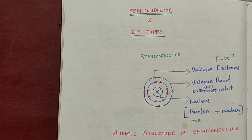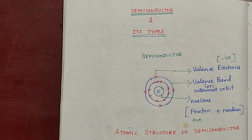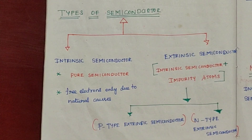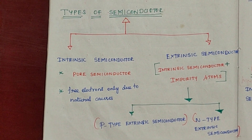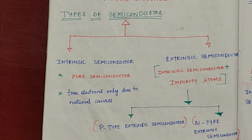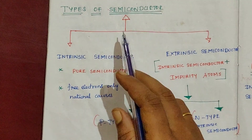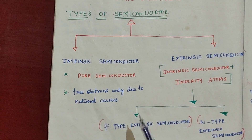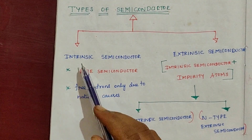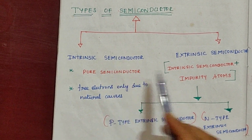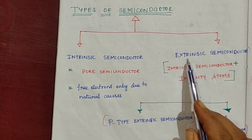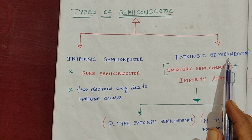Here are the types of semiconductors. Semiconductors are broadly classified into two types. First, intrinsic semiconductor. Second, extrinsic semiconductor.